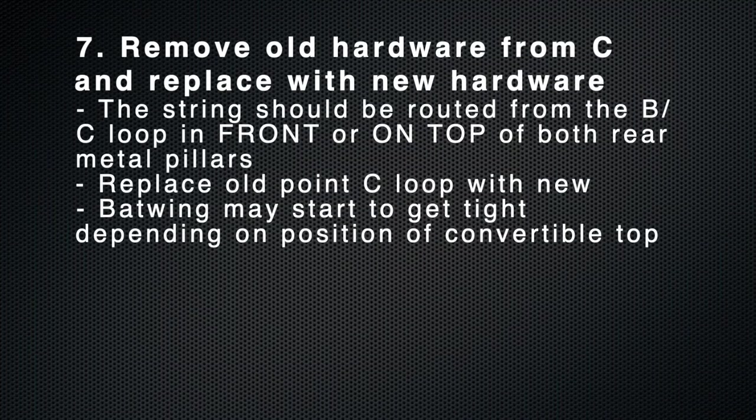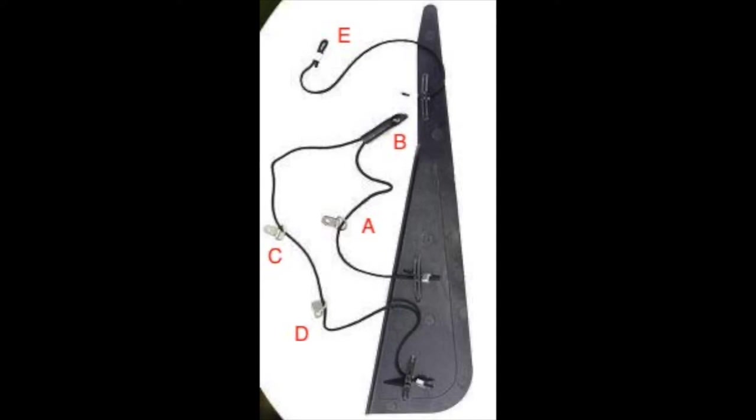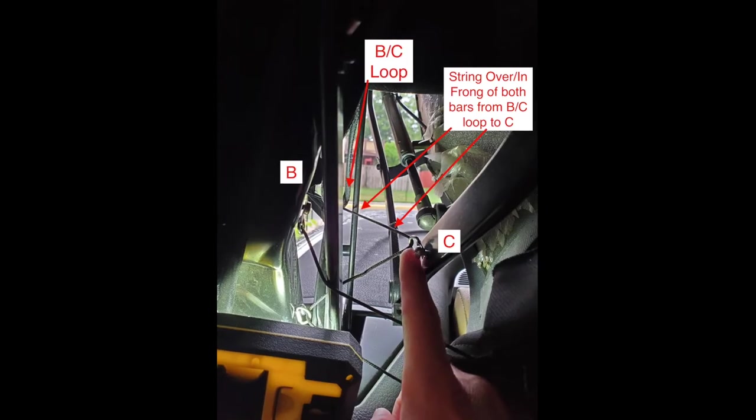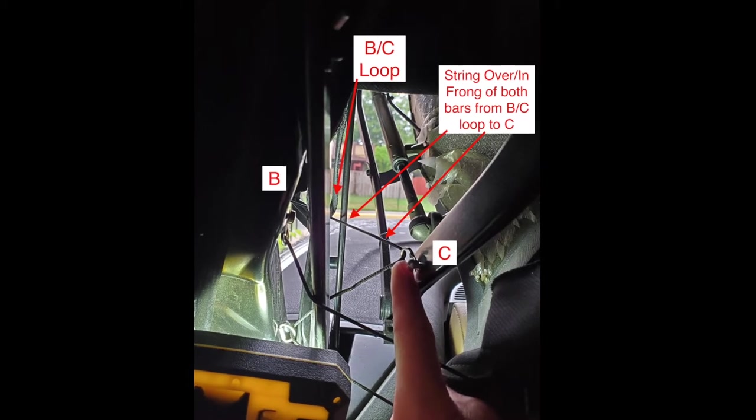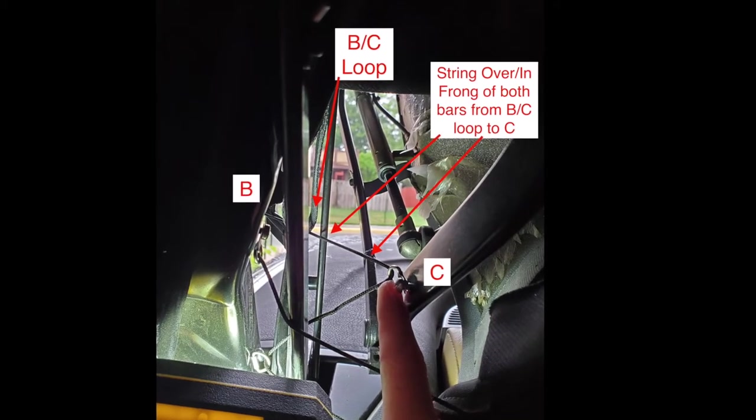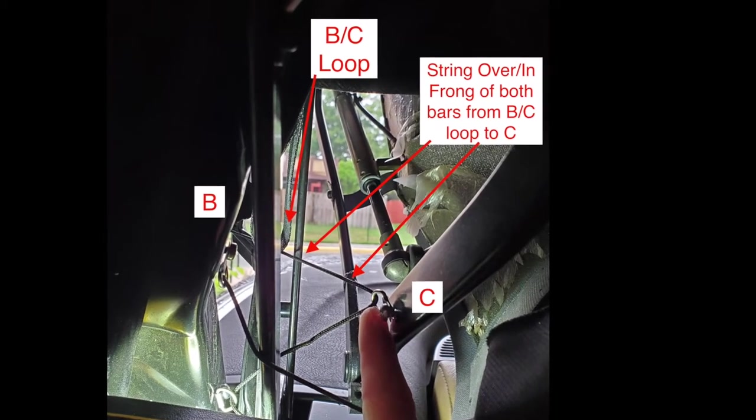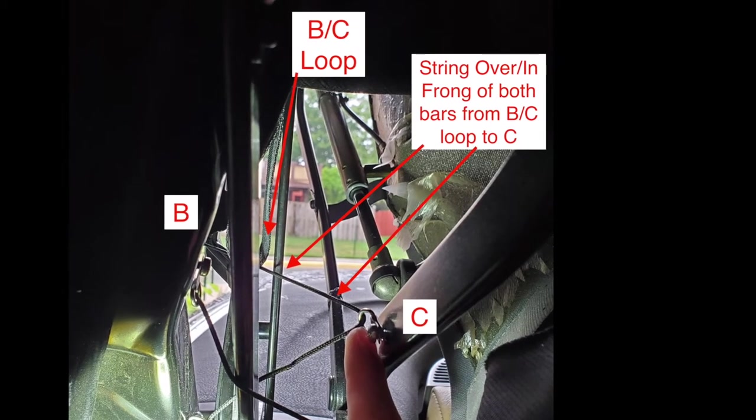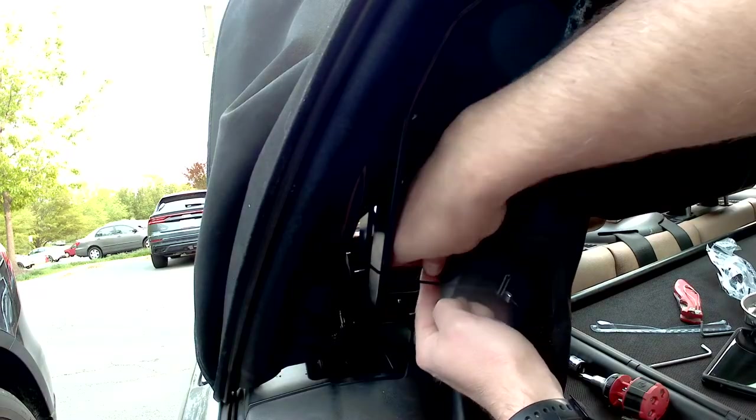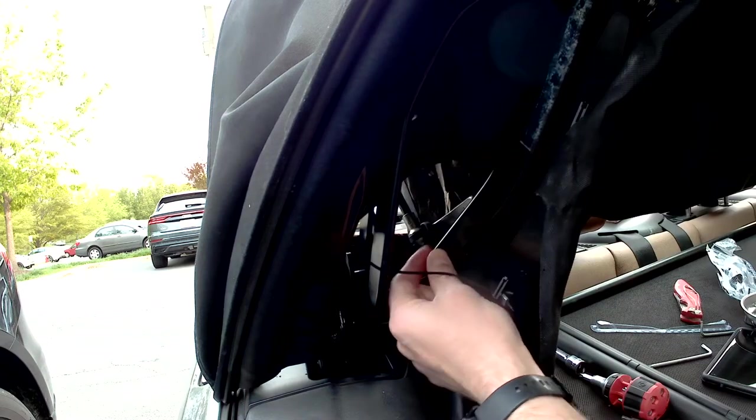The most important part about installing portion C is to ensure that the string is routed correctly. It should go directly from the BC loop, and if you're viewing it from the front of the car, should pass in front of, or on top of, those two metal bars and ultimately attach on point C. Again, my old hardware was a T20 screw.